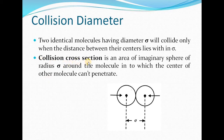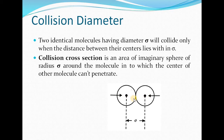Now, what is collision cross-section? It is the area of an imaginary sphere of radius sigma. Imagine a sphere of radius sigma around a particular molecule — the second molecule cannot penetrate through the boundary of that sphere. This imaginary sphere of radius sigma around a molecule, into which the center of another molecule cannot penetrate, is known as the collision cross-section.